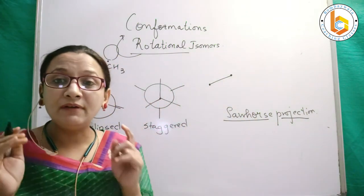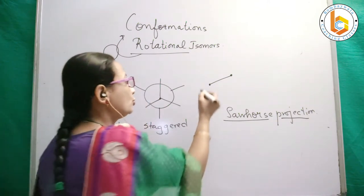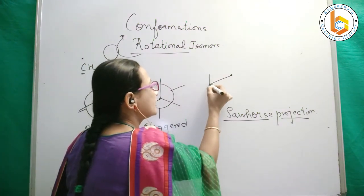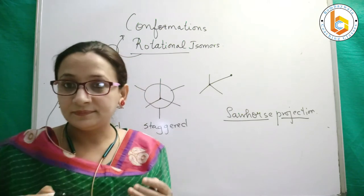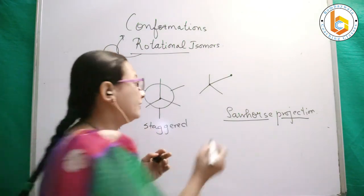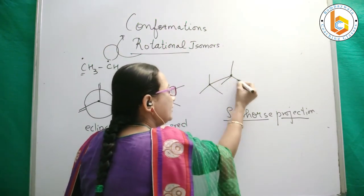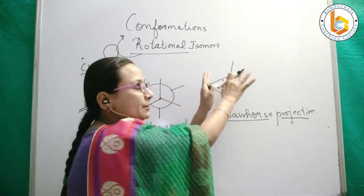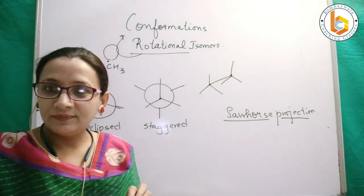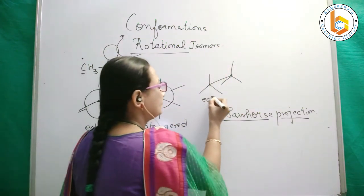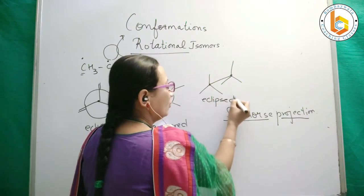The front carbon has three hydrogens, shown by three intersecting lines. If they overlap, this means this is eclipsed.